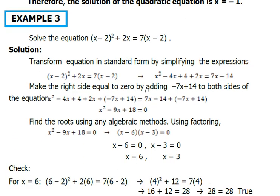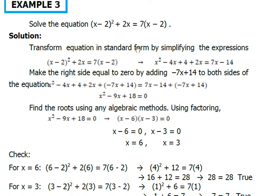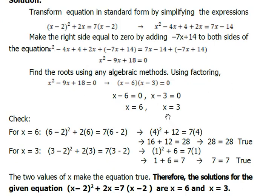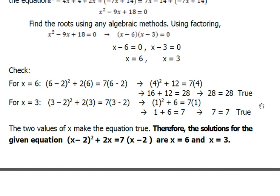For example 3, we have the expression quantity x minus 2 squared plus 2x equals 7 times quantity x minus 2. The process is presented, and we end up with values x equals 6 and x equals 3. When verified, these make the quadratic equation true.